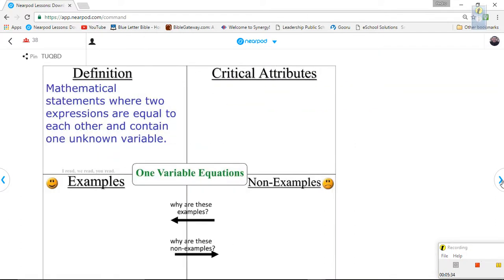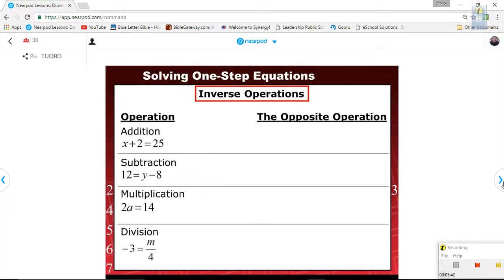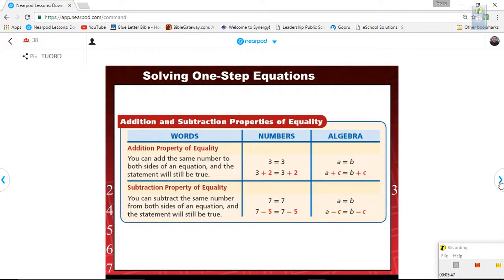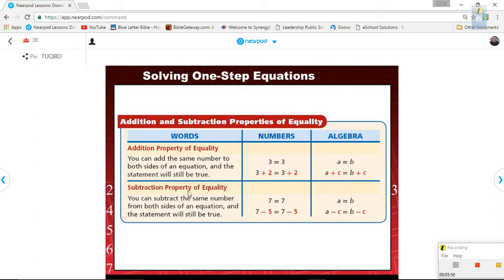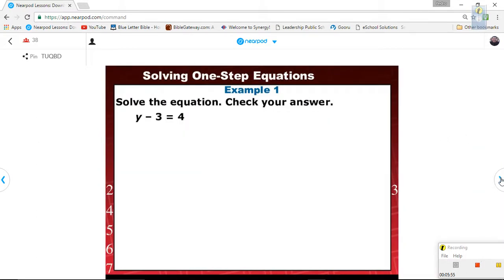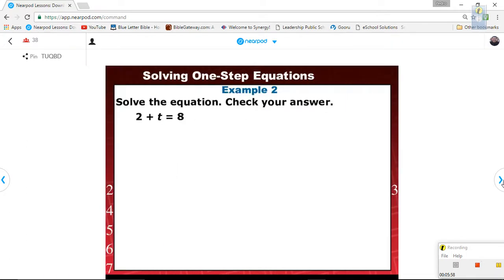We don't need a framework. We filled that in last week. Our steps: simplify, isolate, plot, and check. Is that correct? And last week we went over inverse operations. We talked about these two properties, the addition property of equality and subtraction property of equality. And then we did that example. We did this example. We're going to do this one together.